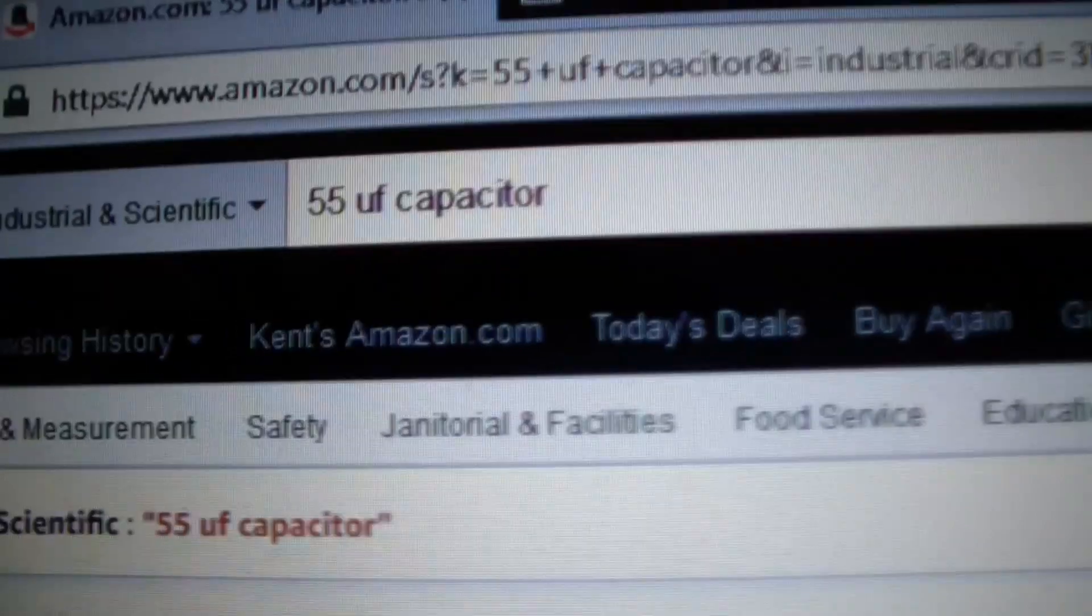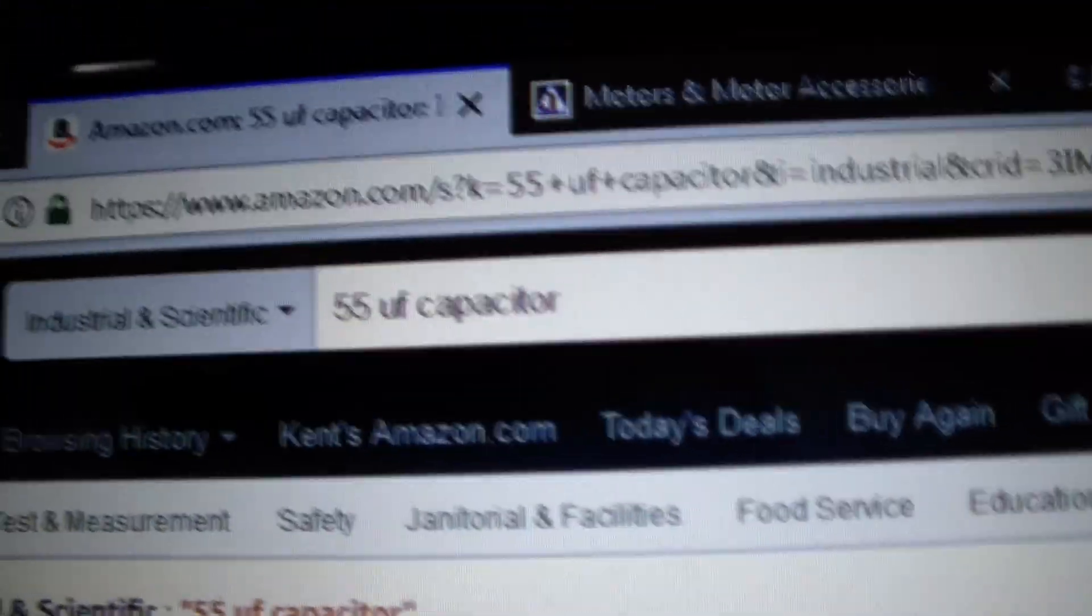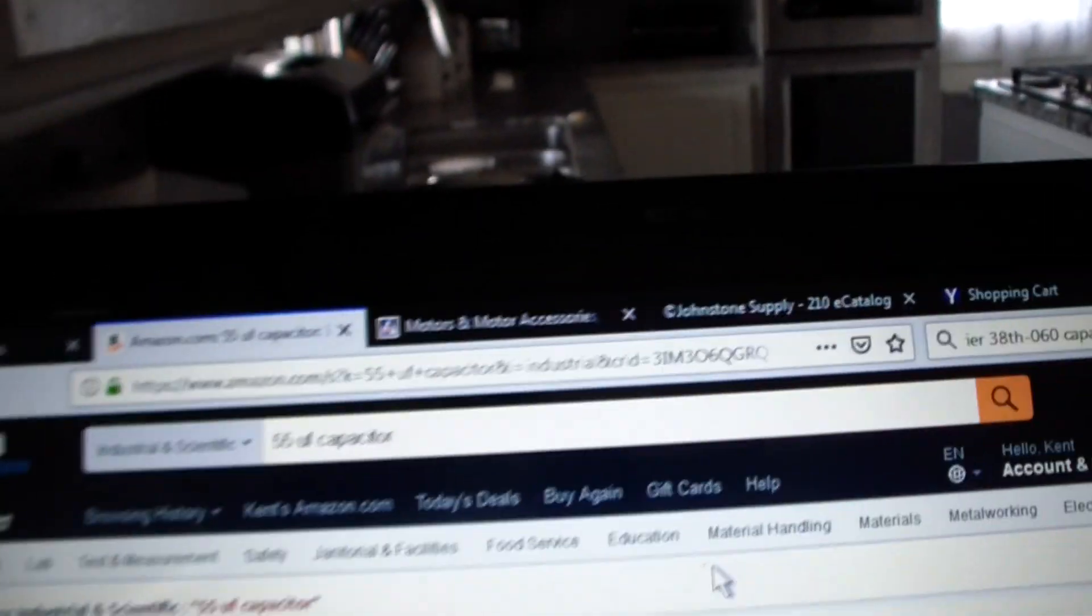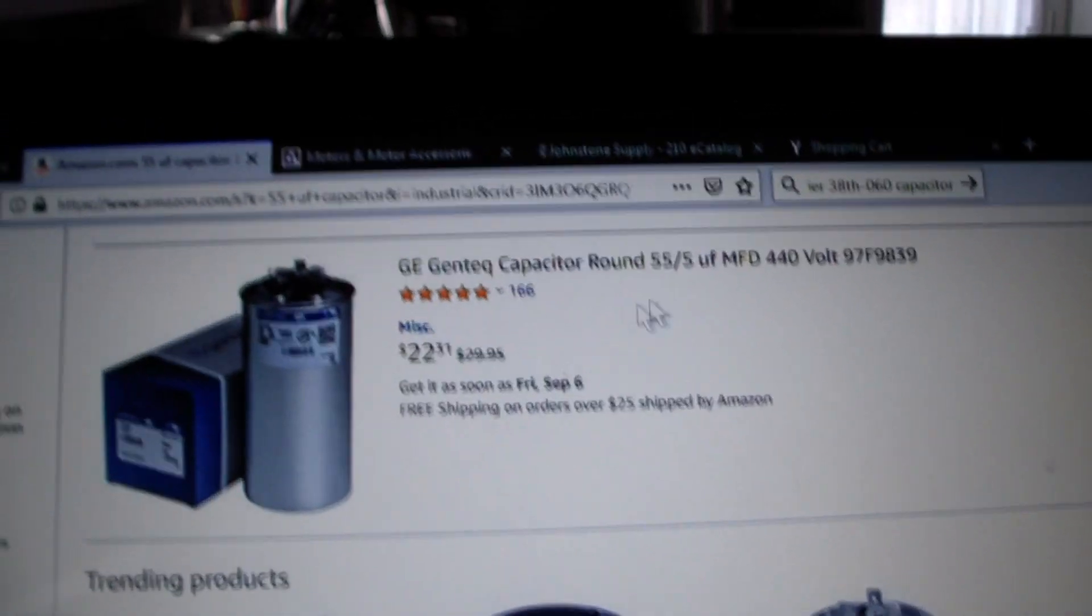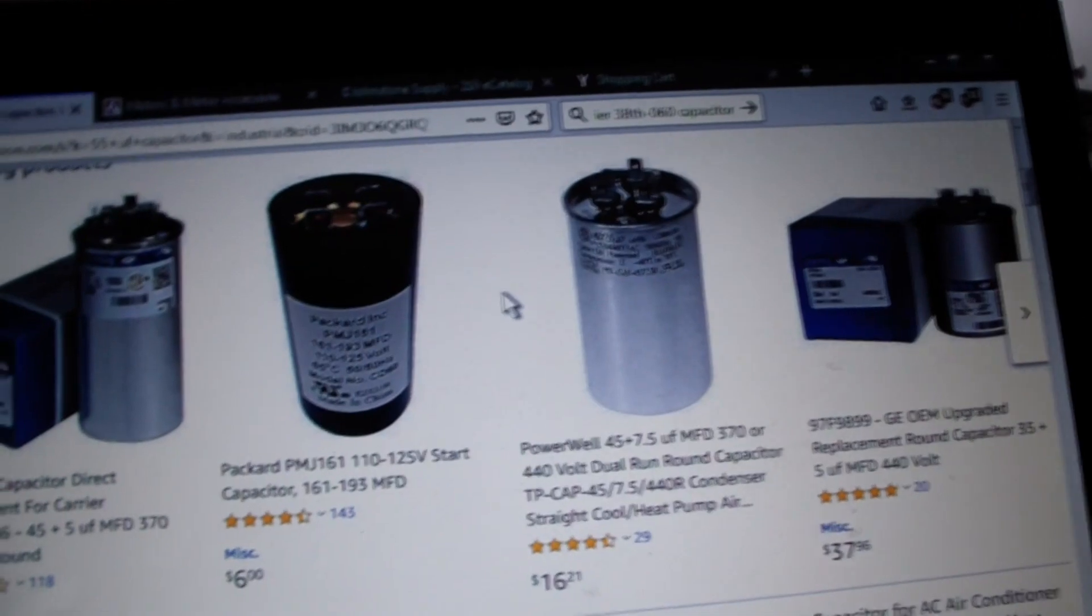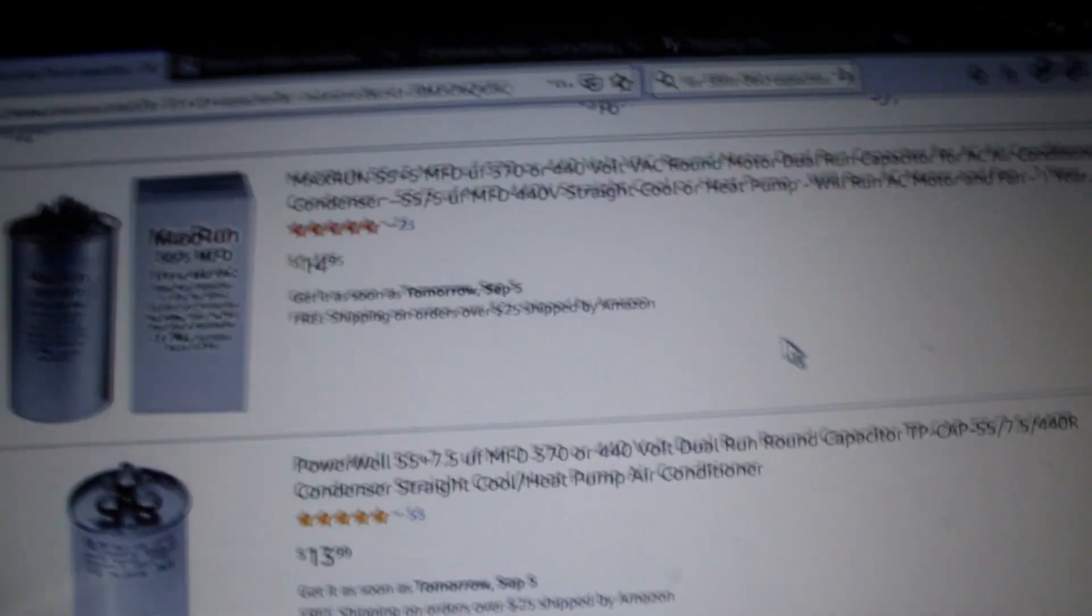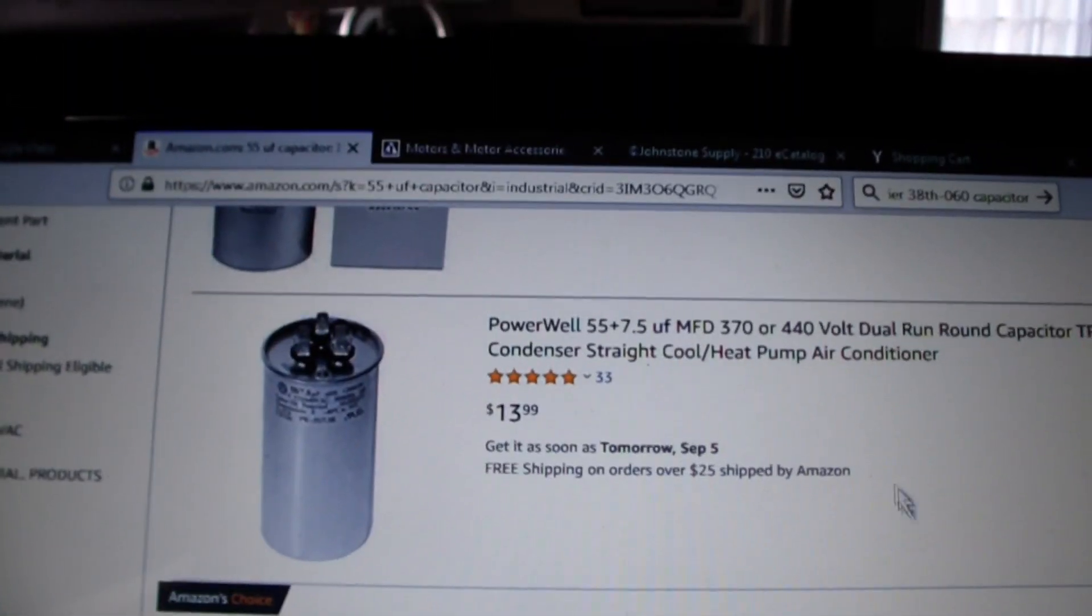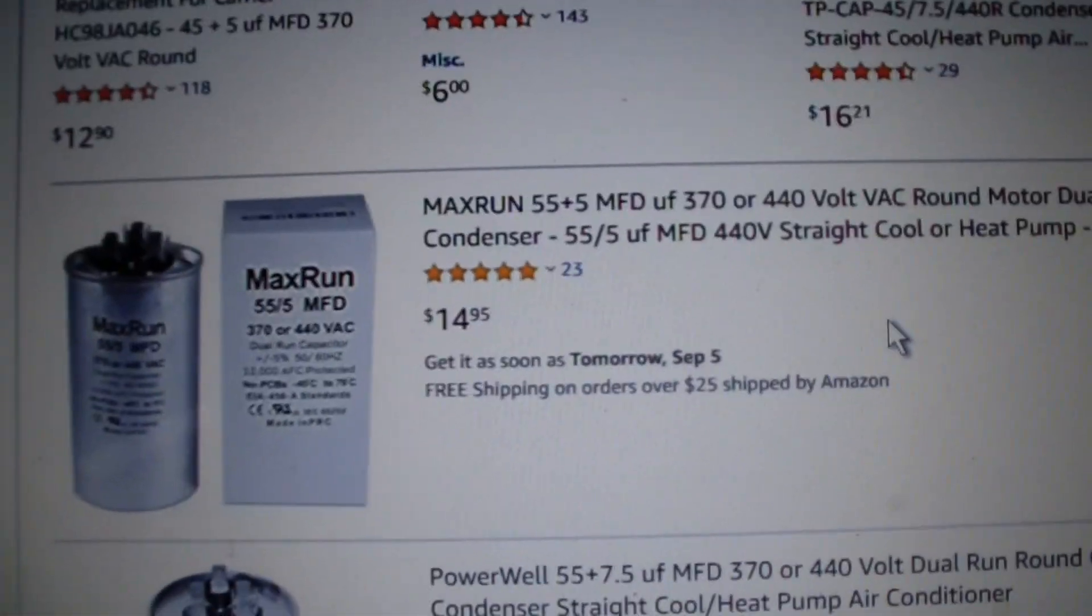You know, since I don't need the oval one, the mounting bracket's gone, so I can go with a round one or an oval one. I just went to Amazon and searched for 55 microfarad capacitor. Here's a nice looking round one, 55. They certainly have a number of 55/5 capacitors.